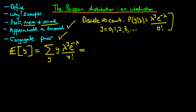Firstly, we can take the e to the power minus lambda out of the summation since it doesn't contain any y. The first term when y is 0 contributes nothing because we have 0 times something positive, which is 0. When y equals 1, the numerator gives lambda divided by 1 factorial, which is just 1, so we just get lambda.